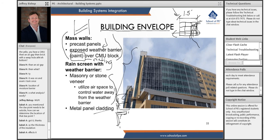Then there are metal panels. These areas here show a concrete column with a metal panel wrap — all these metal panels are rain screens with a weather barrier type of wall system.